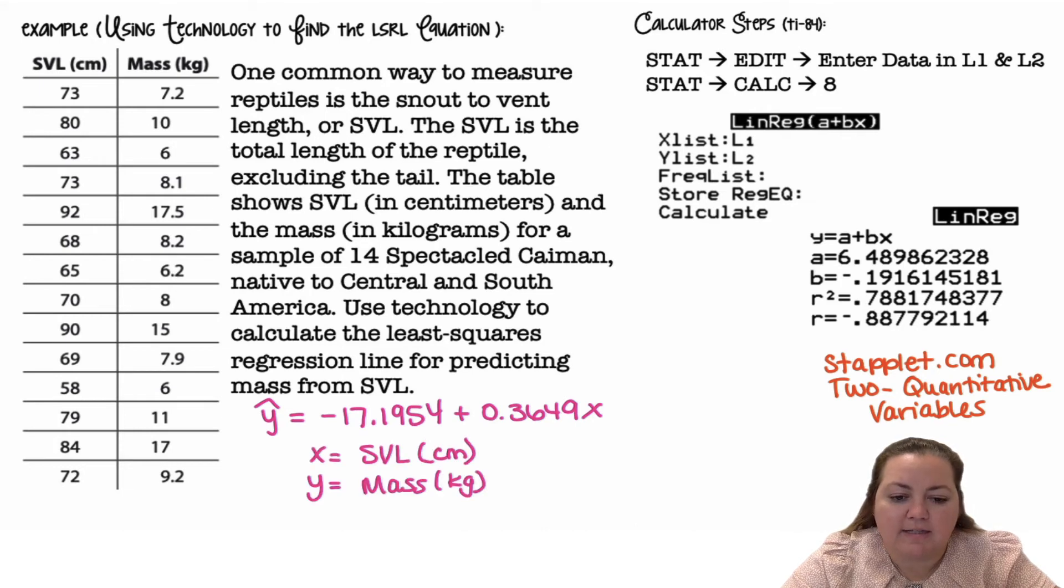All right, where x stands for SVL in centimeters and y stands for mass in kilograms. So again, we're putting in the data into list one for your SVL, mass for list two, stat, calc, eight, and you're getting a and b and plugging them into the equation.